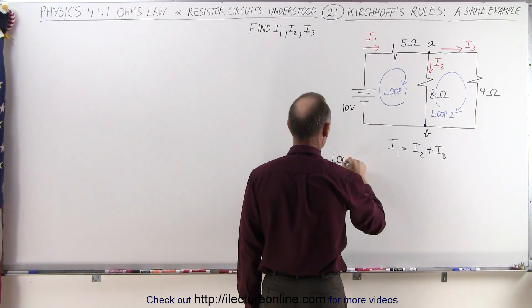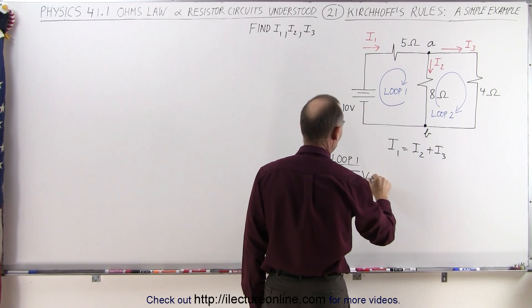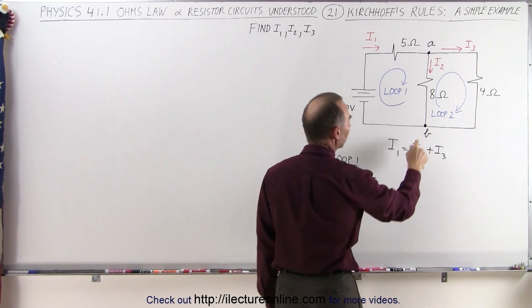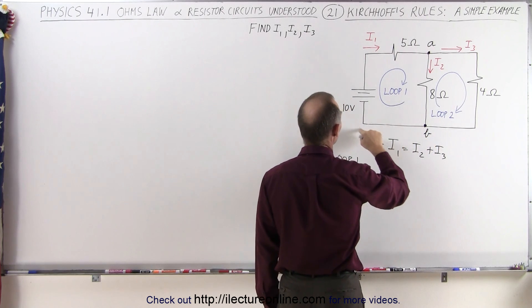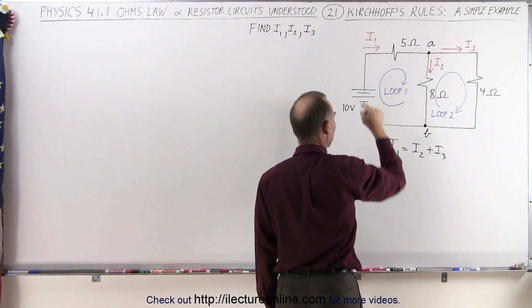So for the second equation, we're going to use loop one, and we're going to sum up all the voltages. When we do, let's see what we get. Starting from point B, we go around here, and we go across the battery from the negative end to the positive end.